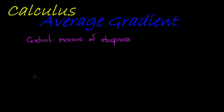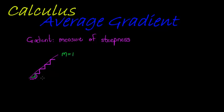Here we have a pair of stairs. Notice how these stairs have a slope where the width of the step and the height of the step are the same. This would be a steepness of 1. Using m for gradient, this would have a gradient of 1.